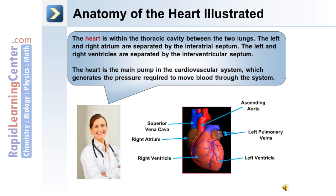The heart itself is located within the thoracic cavity between the two lungs. The left and right atrium are separated by the interatrial septum. The left and right ventricles are separated by the interventricular septum. The heart is the main pump in this system and it generates the pressure required to move blood through the system.